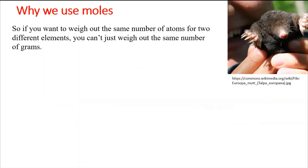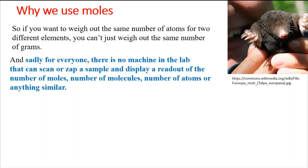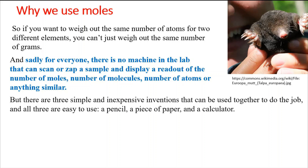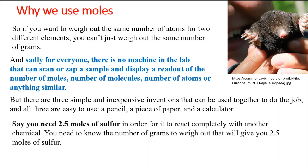So if you want the same number of atoms for two different elements, you can't just weigh out the same number of grams. Unfortunately, there's no machine in the lab that can scan a sample and display the number of moles. But fortunately, we have three inventions: a pencil, a piece of paper, and a calculator — and it's actually a lot easier than it might seem.